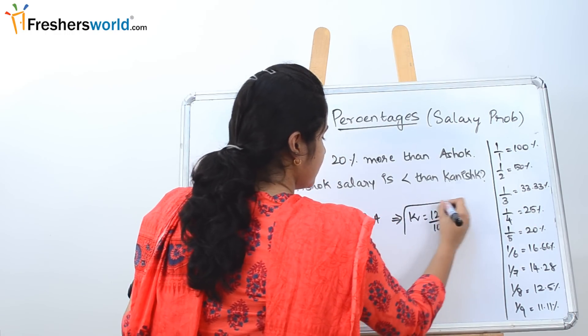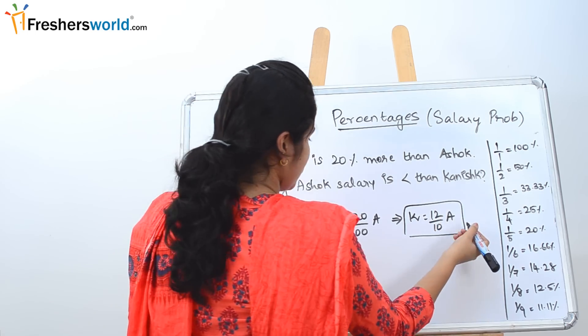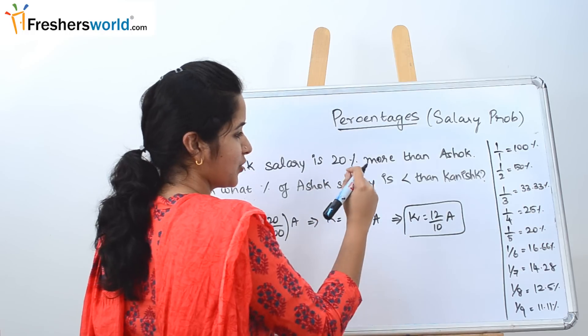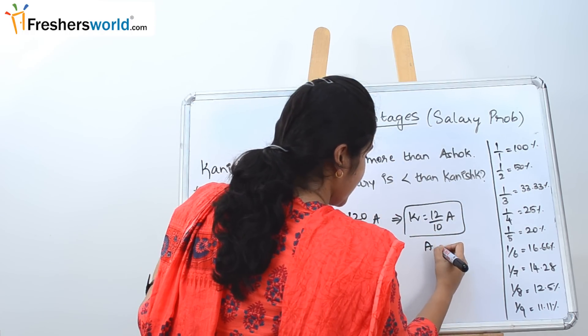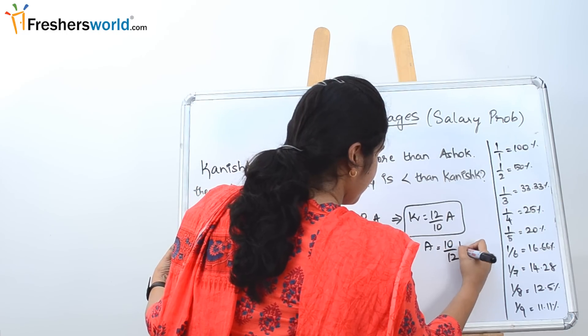It can be written as K is equal to 12 by 10 A. So Kanish is equal to 12 by 10 of A. The question that they have asked is, what percentage of Ashok's salary is less than Kanish? We will write it in the form of A here. A is equal to 10 by 12 of K.